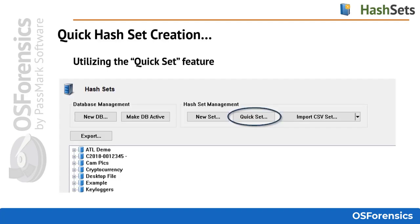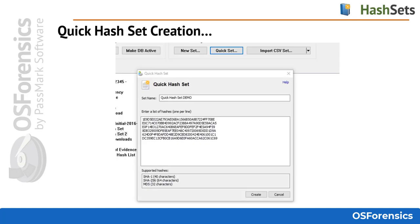Let's look at one other very useful option in the hash sets module. The Quick Set feature allows investigators to create a hash set simply by supplying a set of MD5, SHA-1, or SHA-256 hashes and giving the set a name. This is a very useful and quick feature for rapidly locating a specific file or small group of known files. Creating a new quick hash set is straightforward: simply name the set and copy and paste in a list of hashes in the supported formats — SHA-1, SHA-256, or MD5. Please note this supports the SHA-1 base 16 and not base 32 hash values.